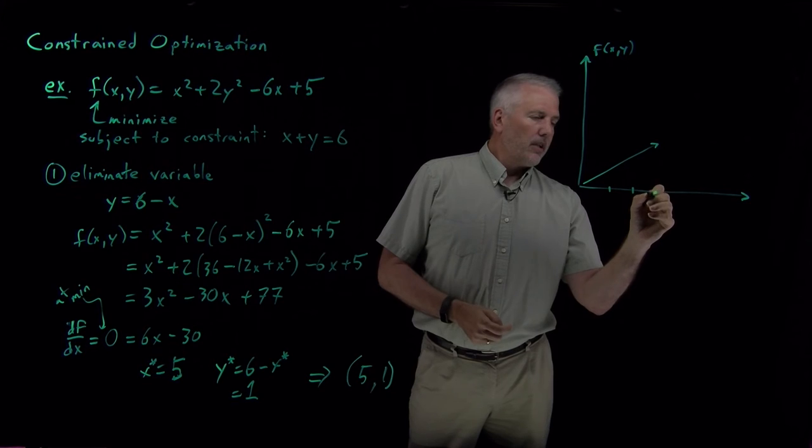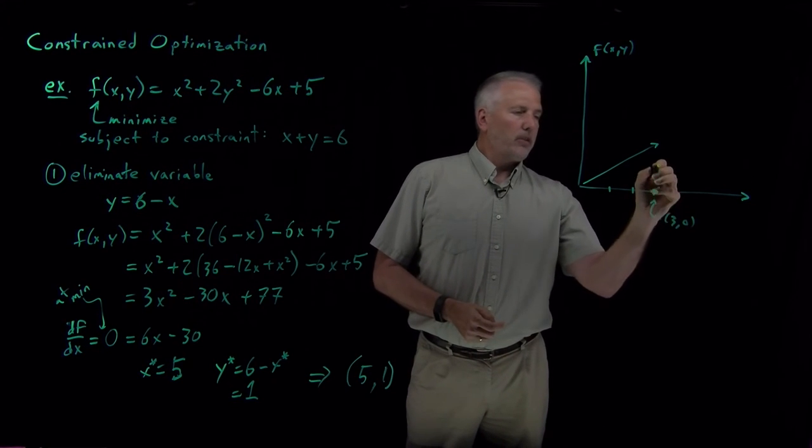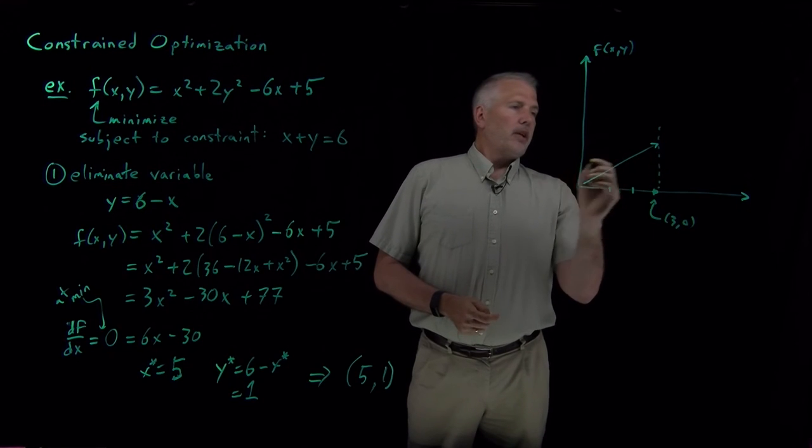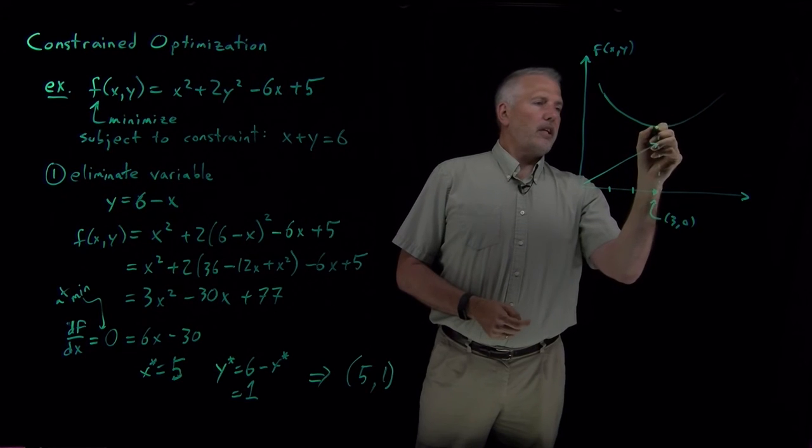So it's going to be a parabola pointing upwards, concave up in both x and y. The minimum of that function, the true minimum of that function, is at 3, 0. So directly above 3, 0...